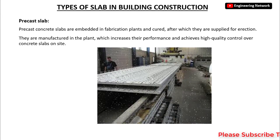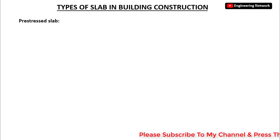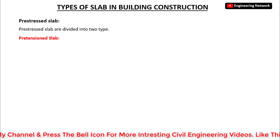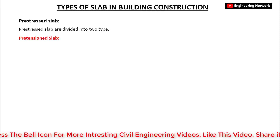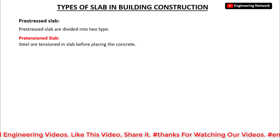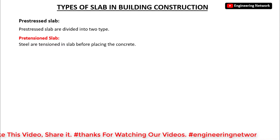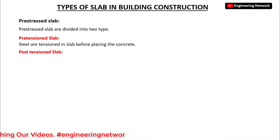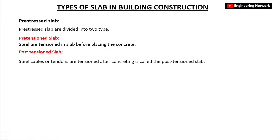Last but not the least, we have pre-stressed slabs. Pre-stressed slabs are further divided into two types. The first is pre-tensioned slabs, where the steel is tensioned in the slab before placing the concrete. The second type is post-tensioned slabs, where the steel cables or tendons are tensioned after concreting.